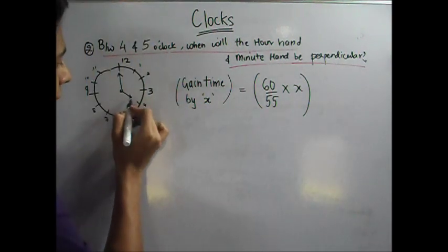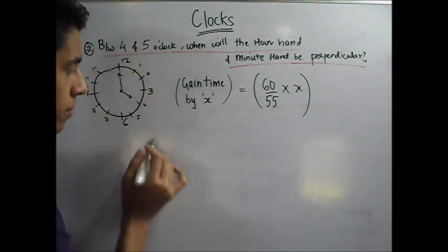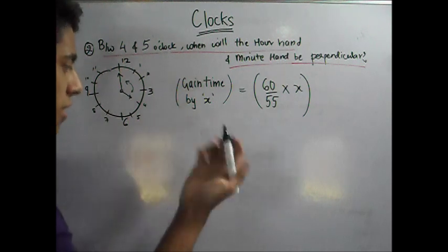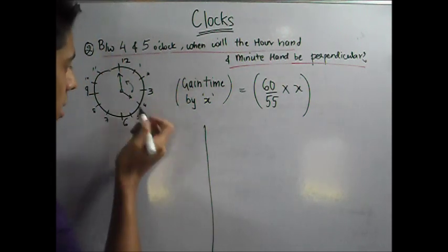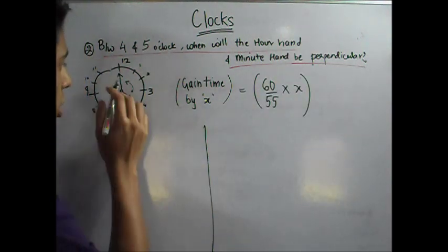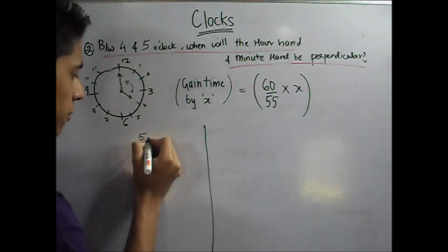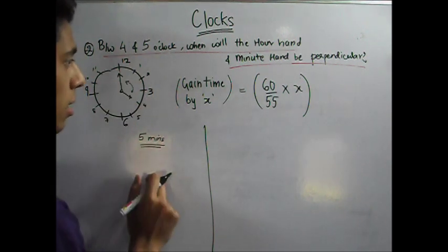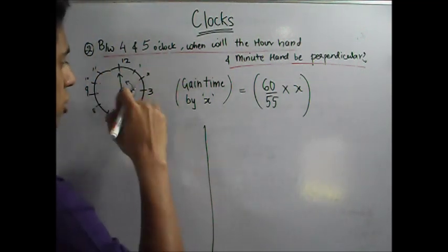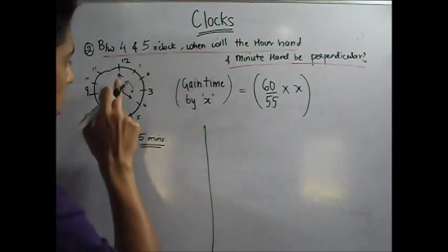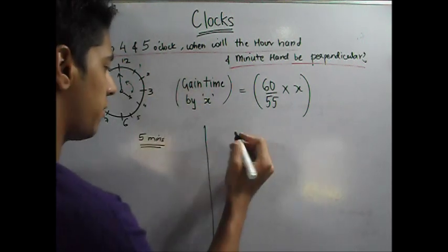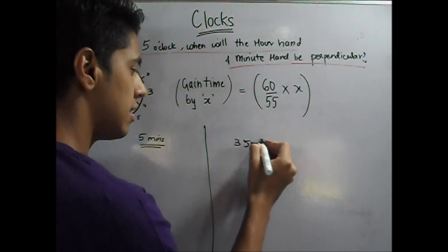Consider 4 o'clock. The hour hand will be at 4 and the minute hand will be at 12, so the difference is 20 minutes. We want it to be 15 minutes. The first case is when the minute hand is behind the hour hand — it is behind by 20 minutes, and we want it to be behind by only 15 minutes, so it has to gain 5 minutes. The second scenario is when the minute hand crosses the hour hand and then has a gain of 15 minutes. It needs to cover 20 minutes to reach the hour hand, then 15 more, so altogether 20 + 15 = 35 minutes.